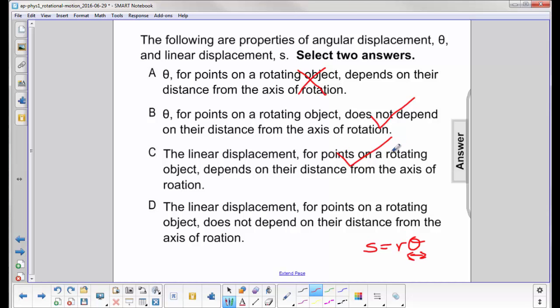So right away you can stop, but if you have time on exams, always check just to make sure you didn't miss a better answer. But for D, it says the linear displacement does not depend on the distance from the axis of rotation. And that's just not true.